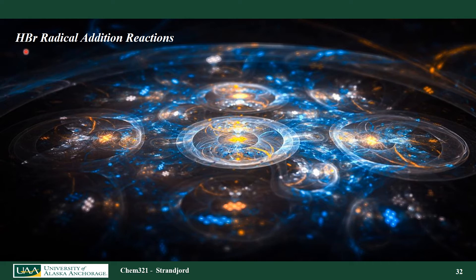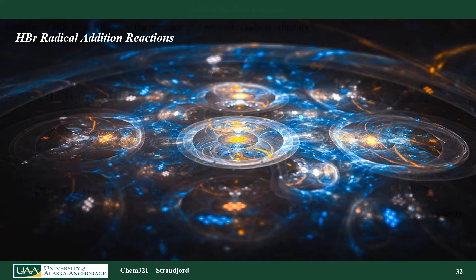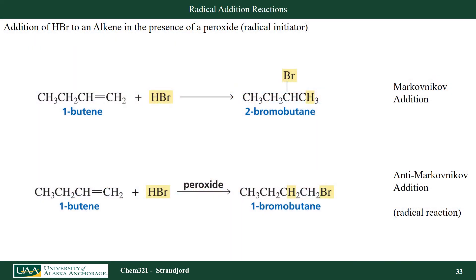The next subject we're going to discuss is the radical addition reactions of HBr, hydrobromic acid. When I take HBr and react it with an alkene, I typically get an addition reaction where I add the hydrogen to the least substituted carbon and the bromine to the most substituted carbon, based on Markovnikov addition rules.